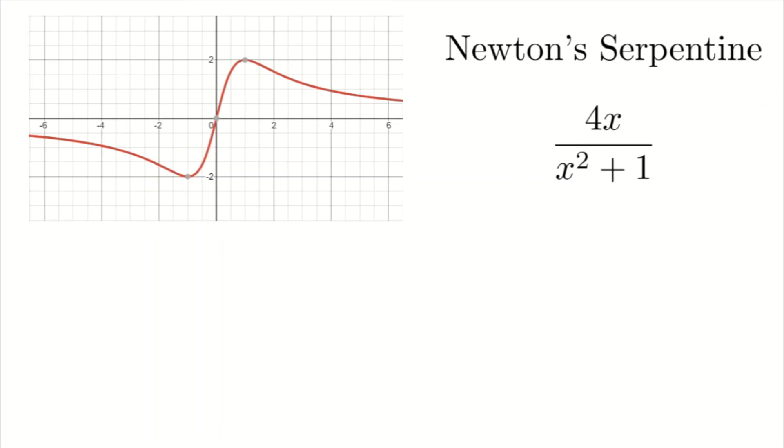This beautiful curve right here is called Newton's Serpentine, and the function that it models is 4x over x squared plus 1. The reason I'm doing this in two different colors, the numerator and denominator, is to emphasize the fact that this is a quotient, and we need to apply the quotient rule to find its derivative. So let's do that.